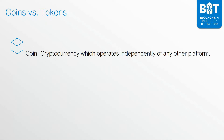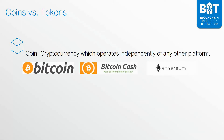For those purposes, a coin is a cryptocurrency which operates independently of any other platform. Examples of coins are Bitcoin, Bitcoin Cash, and Ethereum. And I will be showing you an example of where the coins and the tokens are listed, so you can see how they are clearly separated between coins and tokens.